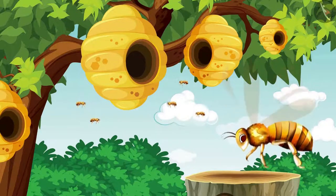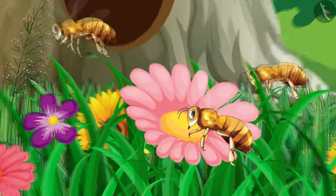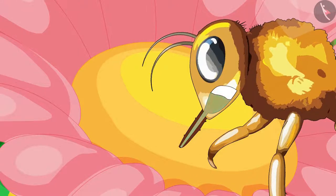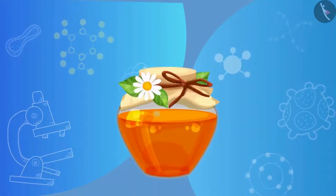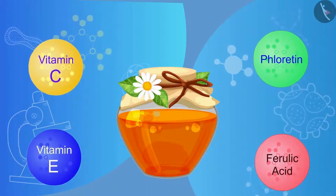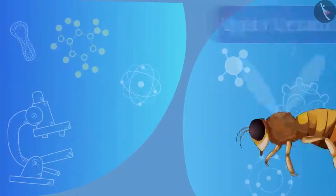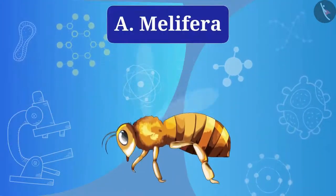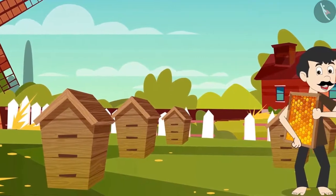Honey is beneficial for everyone — it contains nutrients and is rich in antioxidants. To increase honey production, bees are also taken care of like other animals. Different types of bees are used, such as Apis cerana indica, Apis dorsata, Apis florea, and Apis mellifera. Since beekeeping requires less investment, farmers also consider it as an additional source of earning.